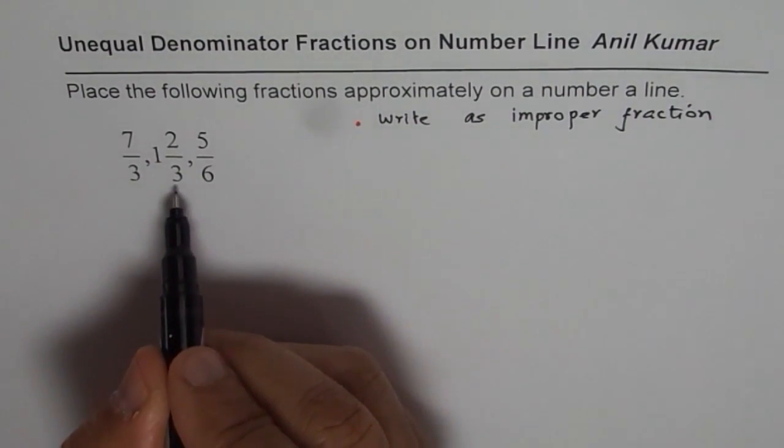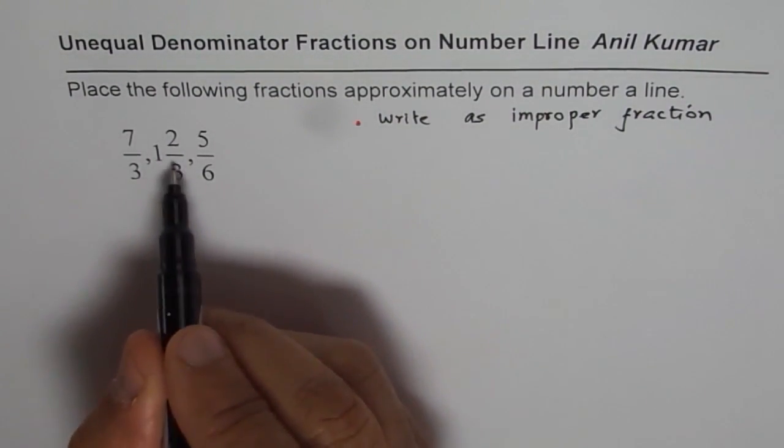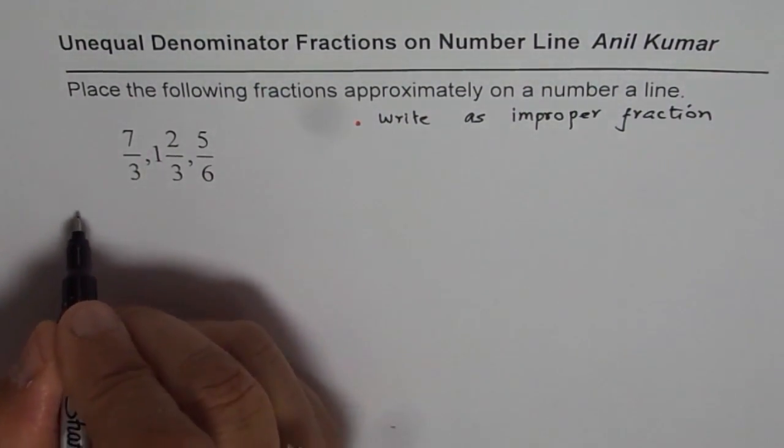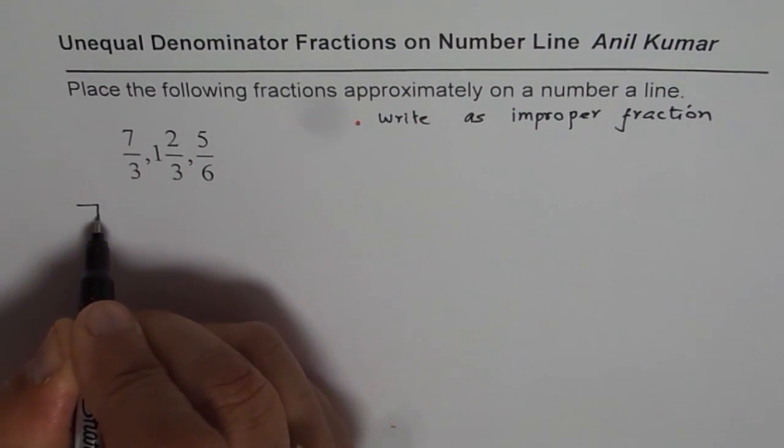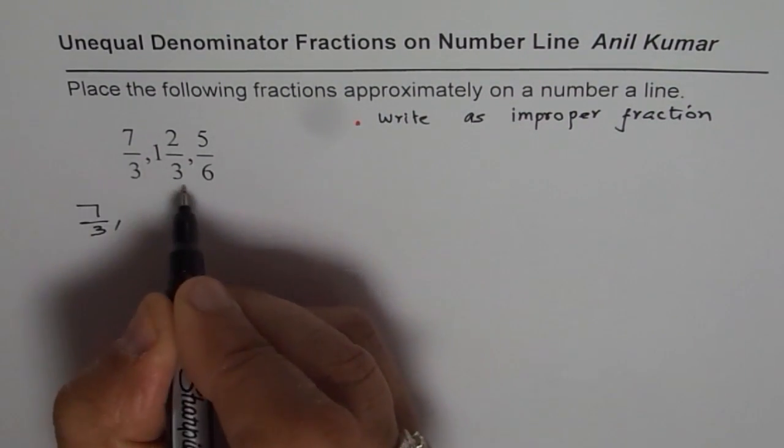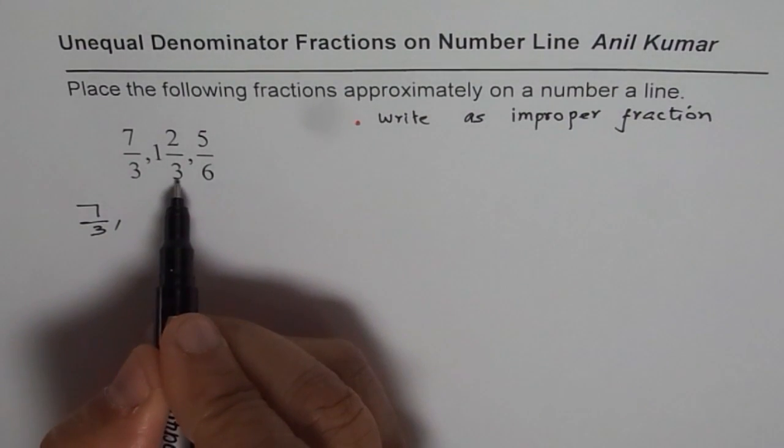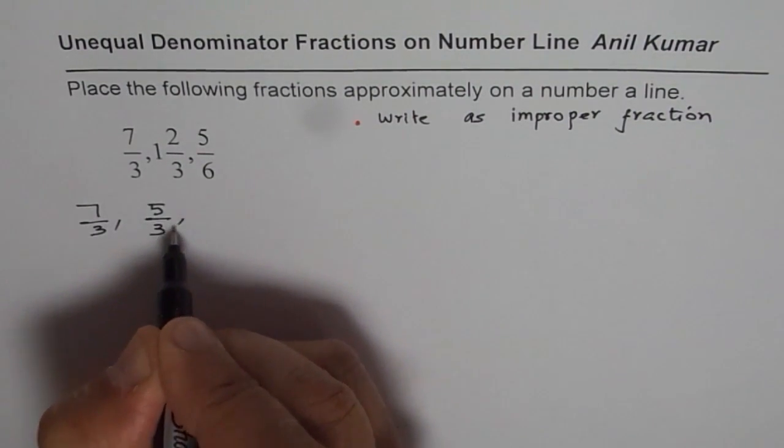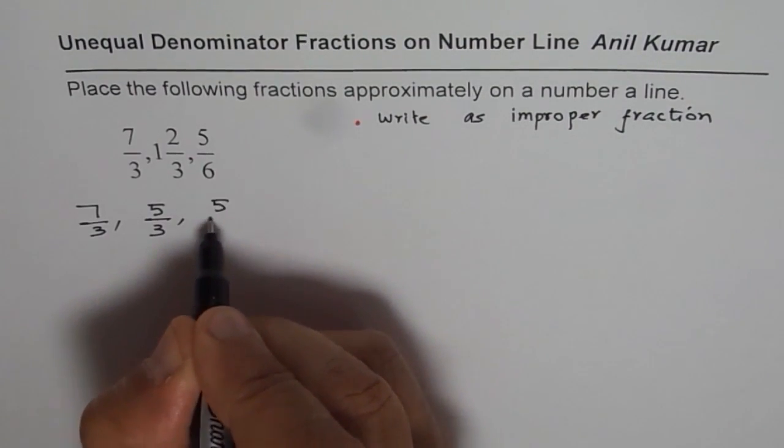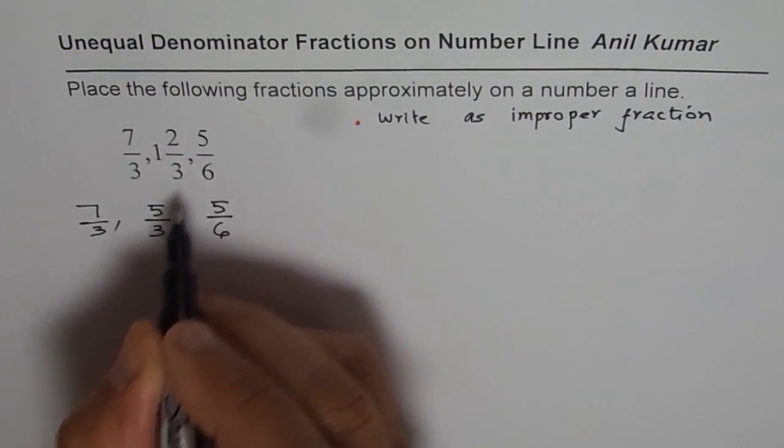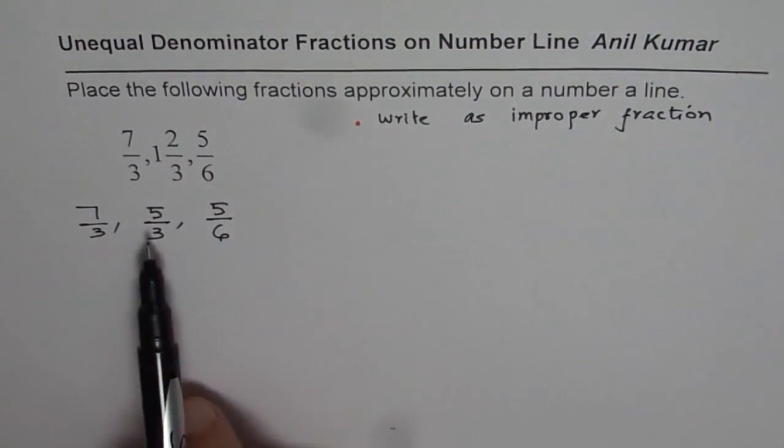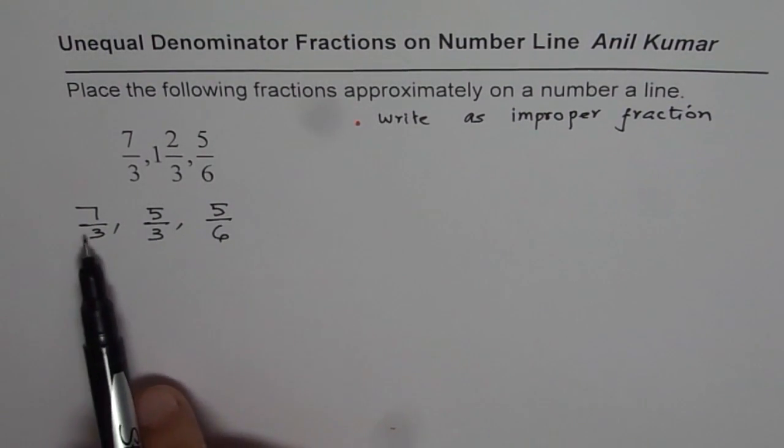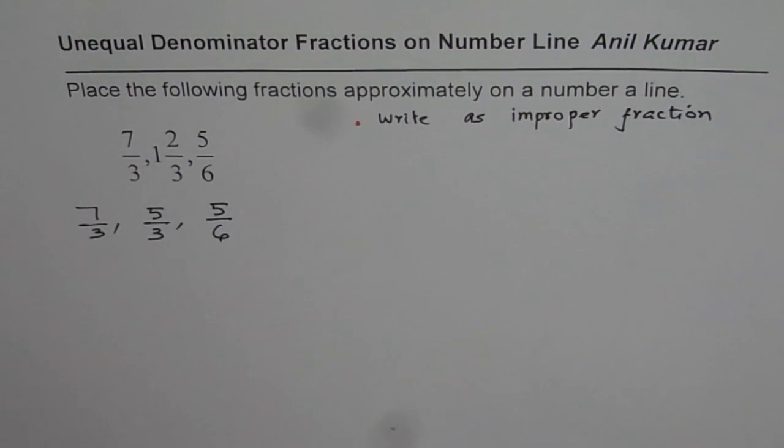First step is to write each number as improper fraction so at least we have one format to deal with. Improper fraction means that the numerator could be higher than denominator. Now 1 and 2 over 3 is the one which needs to be changed. 7 over 3 is okay, so we'll write 7 over 3 as such.